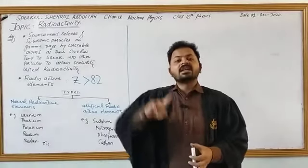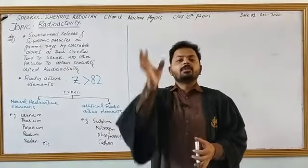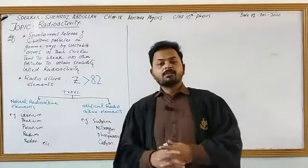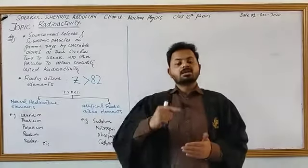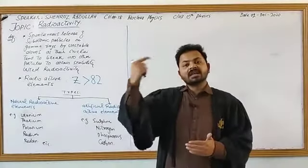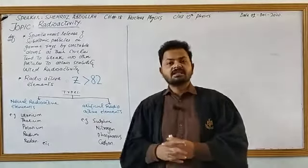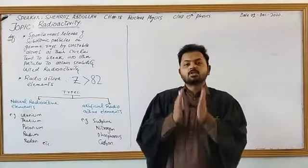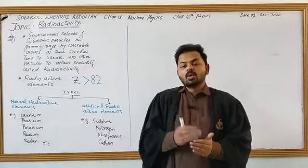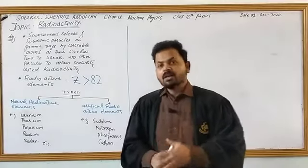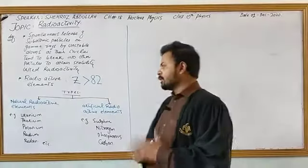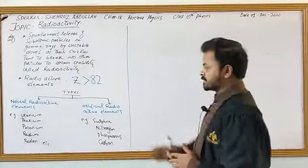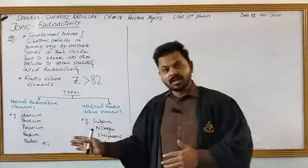All those elements whose atomic number is greater than 82 are considered radioactive elements. They are highly unstable, and to attain stability they perform radioactivity. Radioactive elements are of two types: natural radioactive elements and artificial radioactive elements.